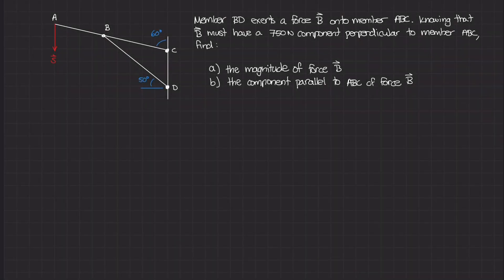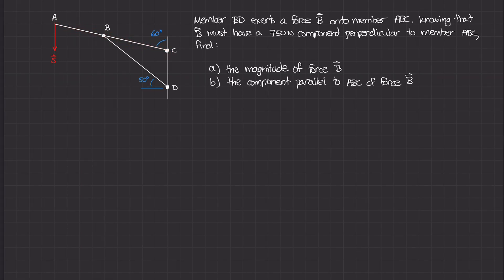Welcome to another example on force components. In this example, we have a structural system with a wall at CD, and a member ABC that is attached to the wall at point C and supported by member BD. On member ABC, there is a force S acting straight downward from point A, pulling the ABC member down. The member resisting that downward movement is member BD, which helps support ABC from rotating downwards.